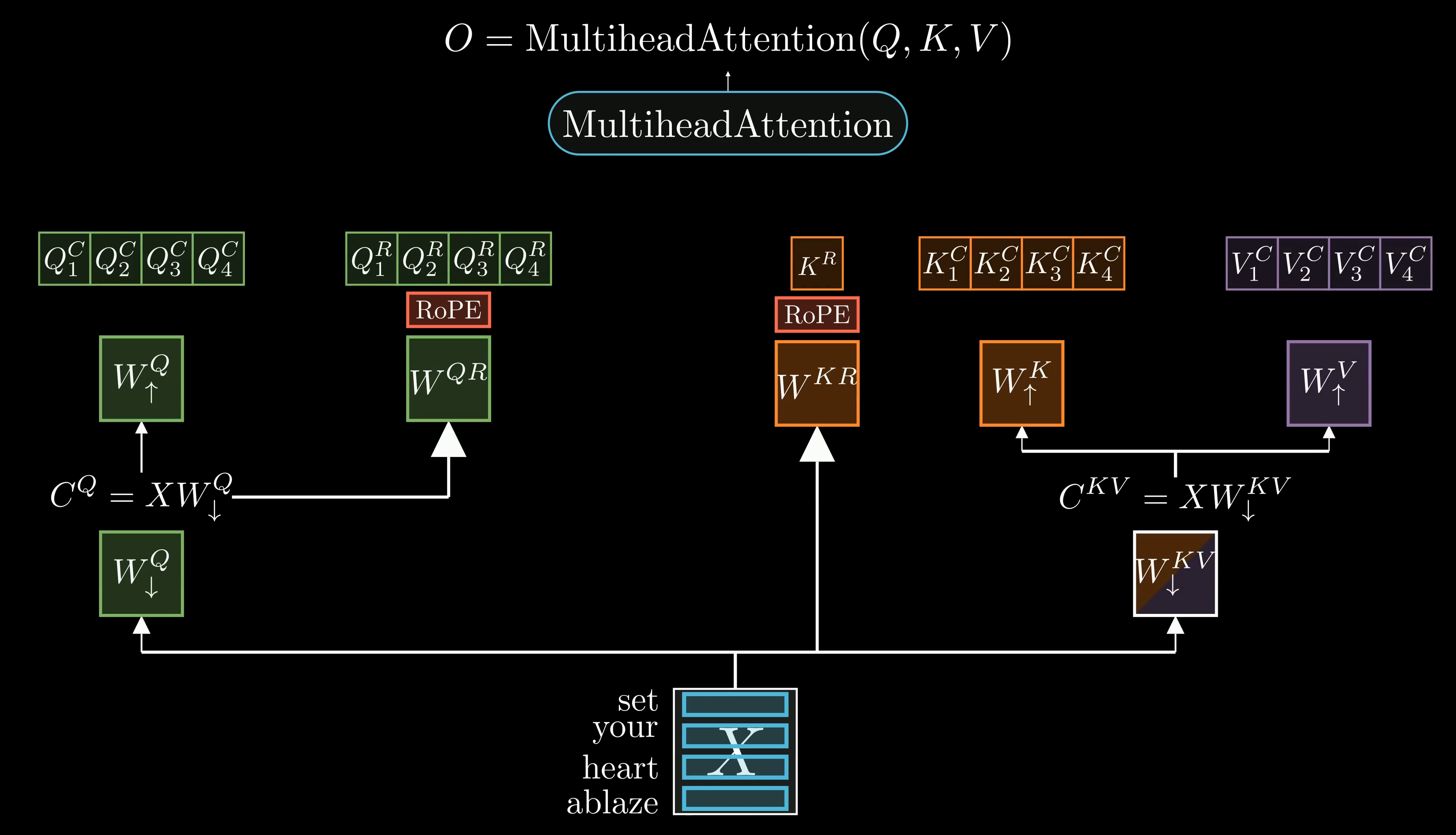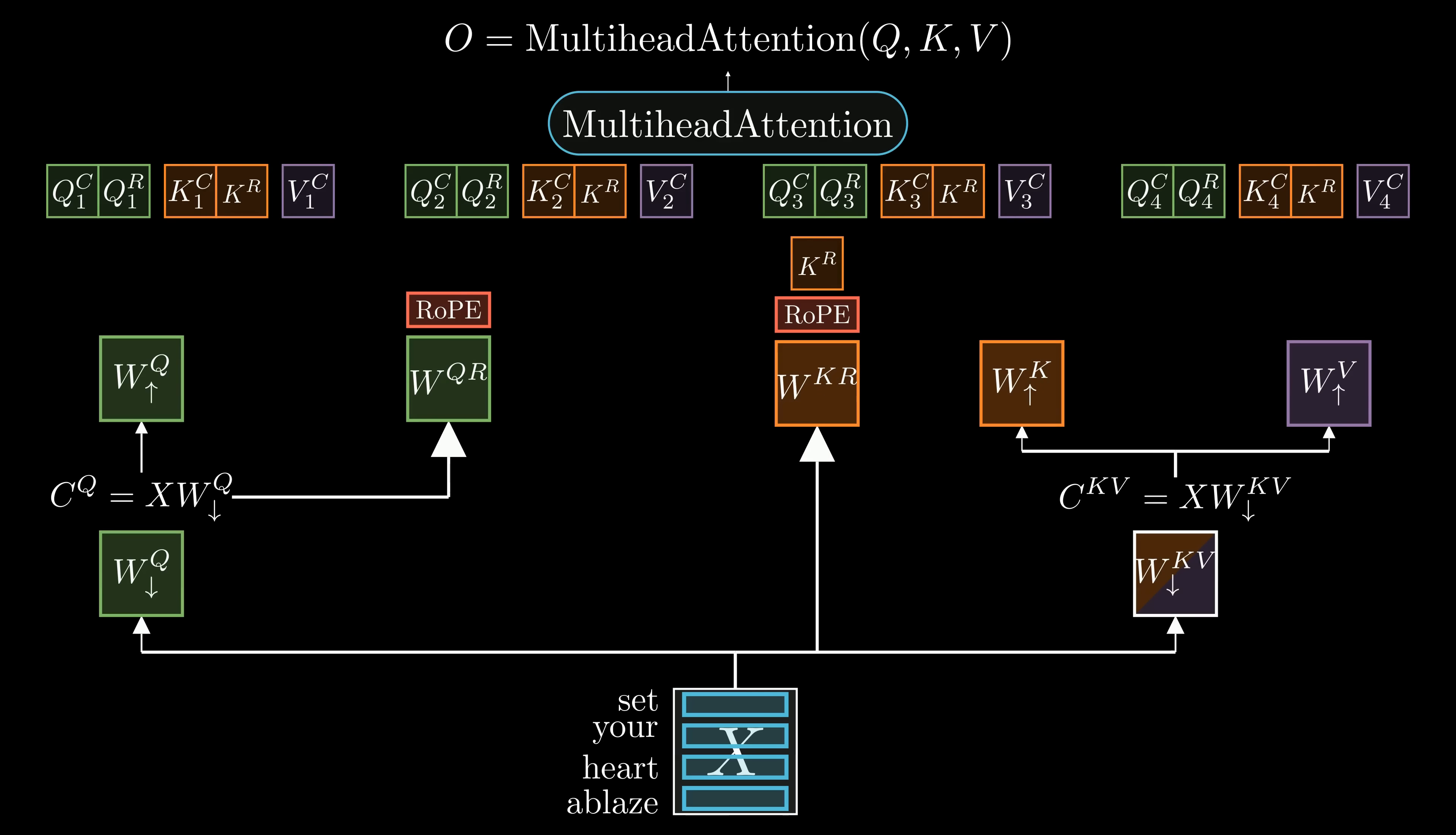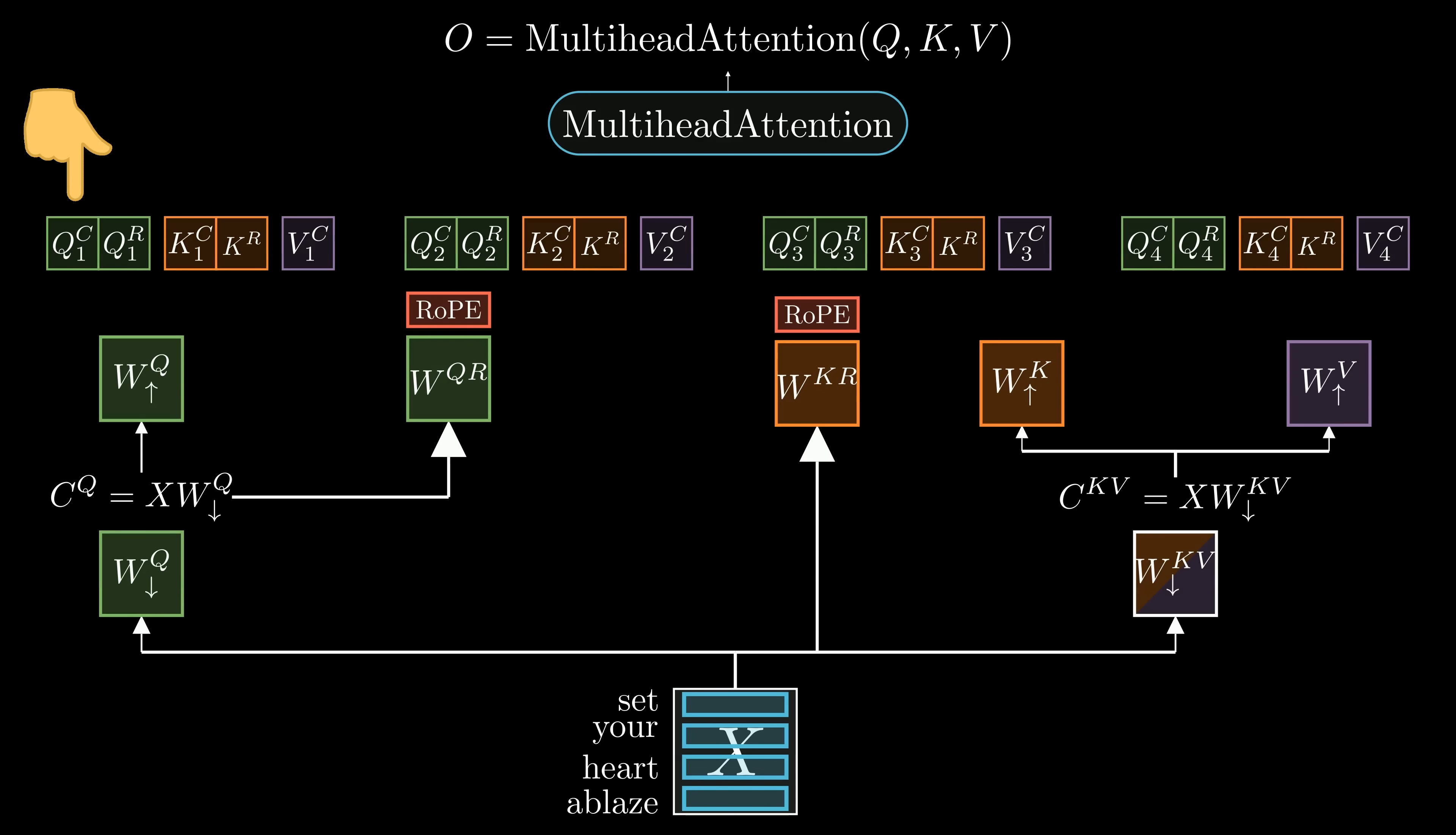For MLA, the query, key, and values are regrouped for each head. Specifically for the query, we concatenate the compressed query component, QC, with the rotated query, QR. Similarly, the key is constructed by concatenating the compressed key, KC, with its rotated counterpart, KR.